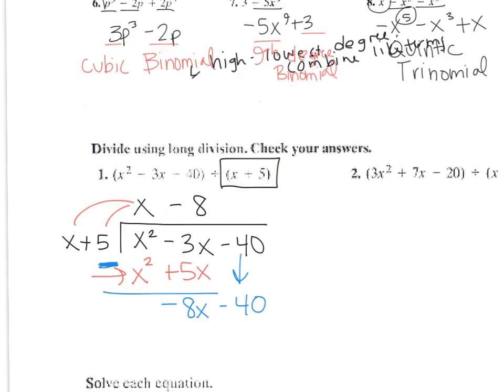Now you multiply negative 8 times x is negative 8x. Then don't forget to do the second term. Negative 8 times 5 is negative 40. This is 0, so there's no remainder.